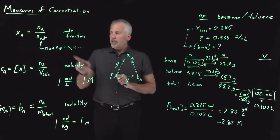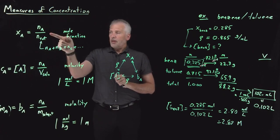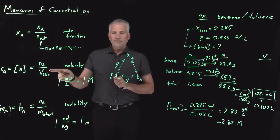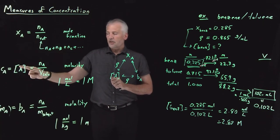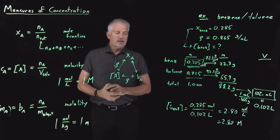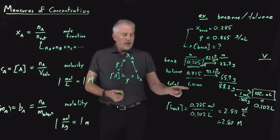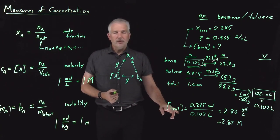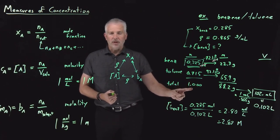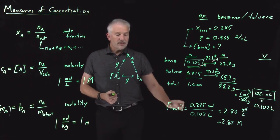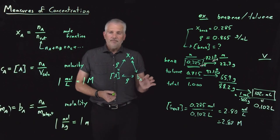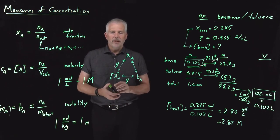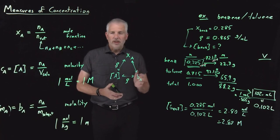Each of these concentration units is an extensive property divided by an extensive property — total amount of solute over total amount of solvent or solution — so concentration works out to be an intensive property. That means it doesn't matter how much solution we assume we have; the concentration is the same. However, when discussing multi-component solutions, the ideas of intensive and extensive properties get more complicated and will need further discussion next time.